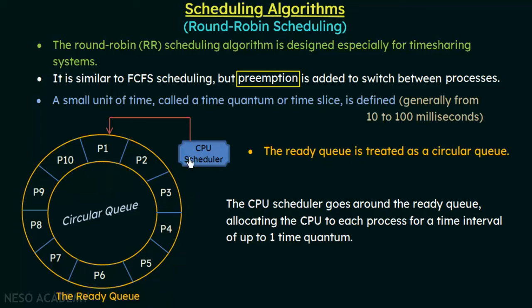The CPU scheduler assigns the CPU to the processes. First, the scheduler comes and assigns the CPU to the first process, P1 — similar to FCFS, first come first serve. The CPU is given for a particular time quantum. Let's say the time quantum is 5 milliseconds. The CPU will be given to P1 for 5 milliseconds — that is one time quantum.